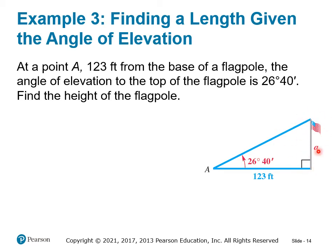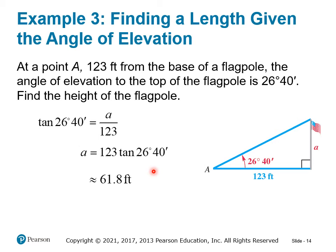We're trying to find the height of the flagpole, labeled lowercase a since it's opposite angle A. We have the opposite side and the adjacent side, so we use tangent: tangent of A equals a over 123. Multiplying both sides by 123 and using a calculator gives the flagpole height as approximately 61.8 feet. The key is drawing the diagram to see the triangle, then choosing the right trig function based on what you're given and what you're looking for.